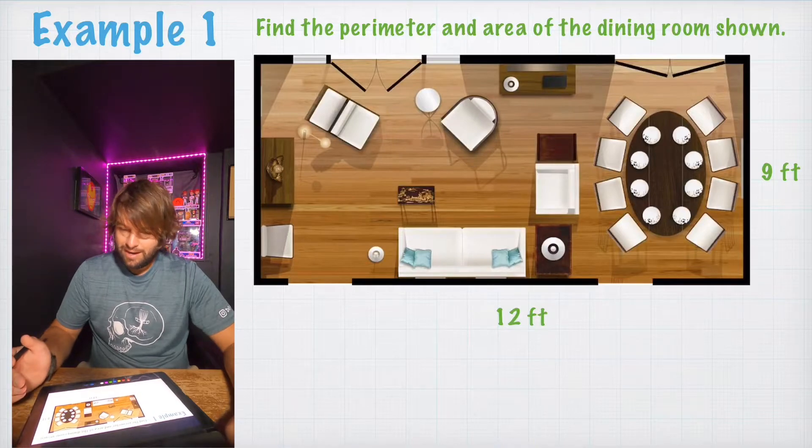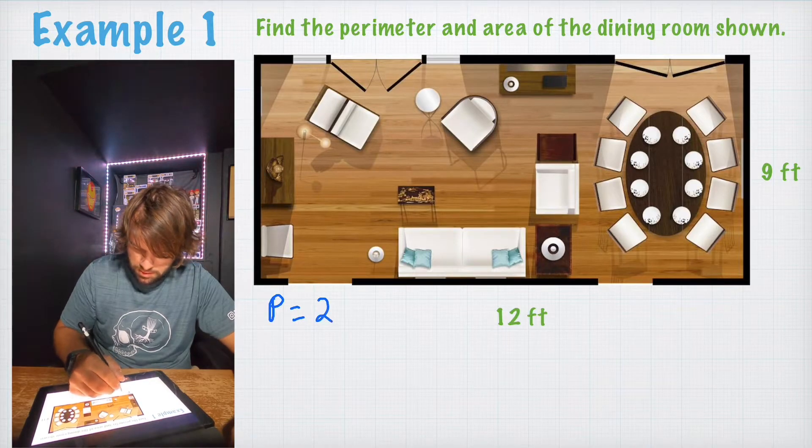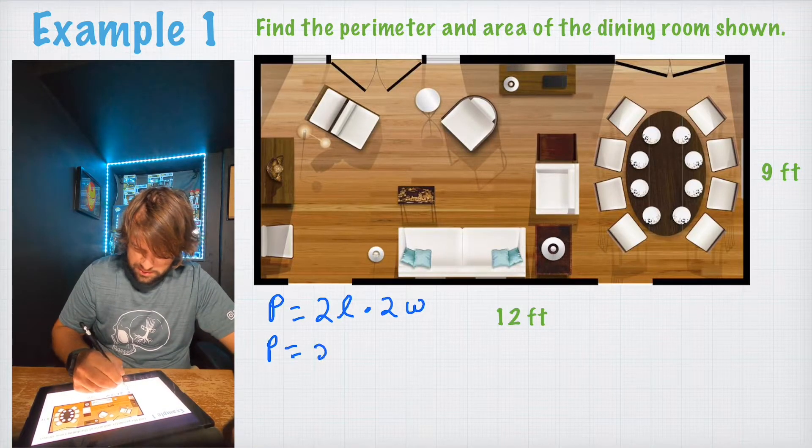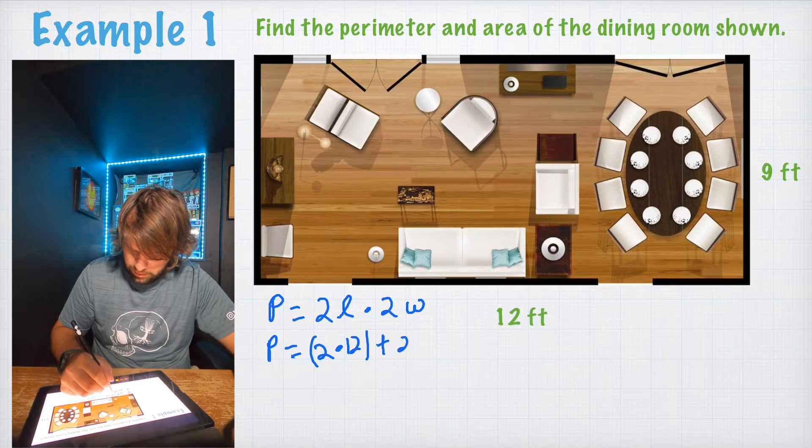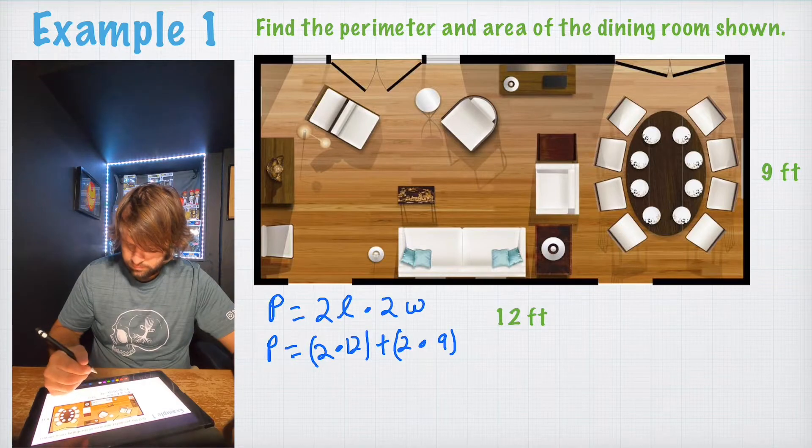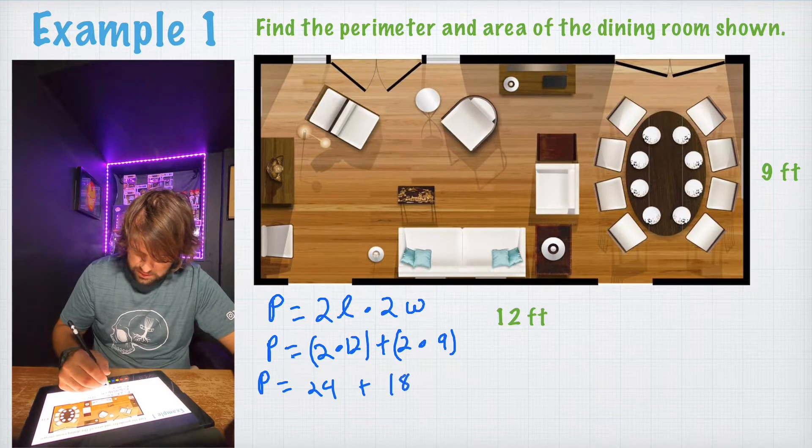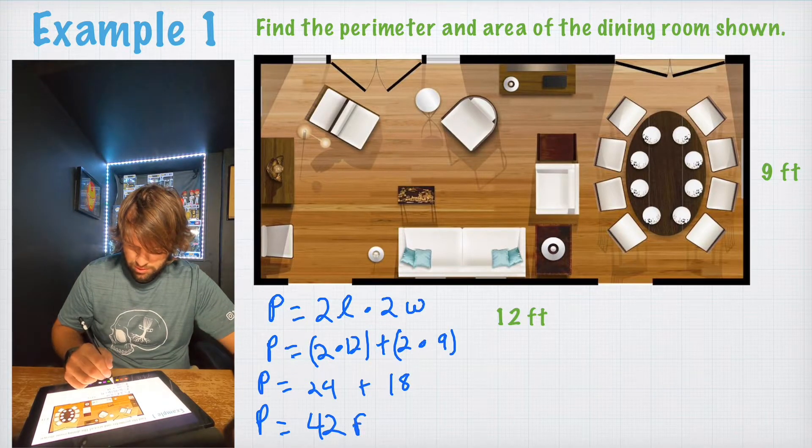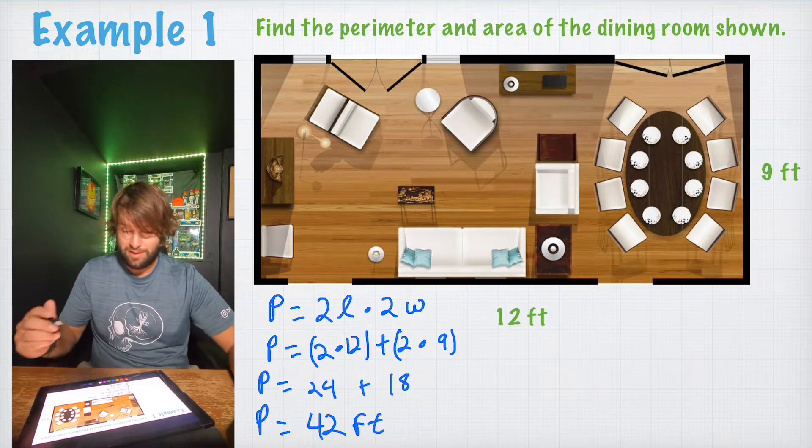Find the perimeter and area of the dining room shown. So, let's go ahead. Perimeter equals 2 length plus 2 width. So, P is going to equal 2 times 12 plus 2 times 9. P is going to equal 24 plus 18. And lastly, P should equal 42 feet. So, if you were to walk all the way around this dining room, it's going to be 42 feet.